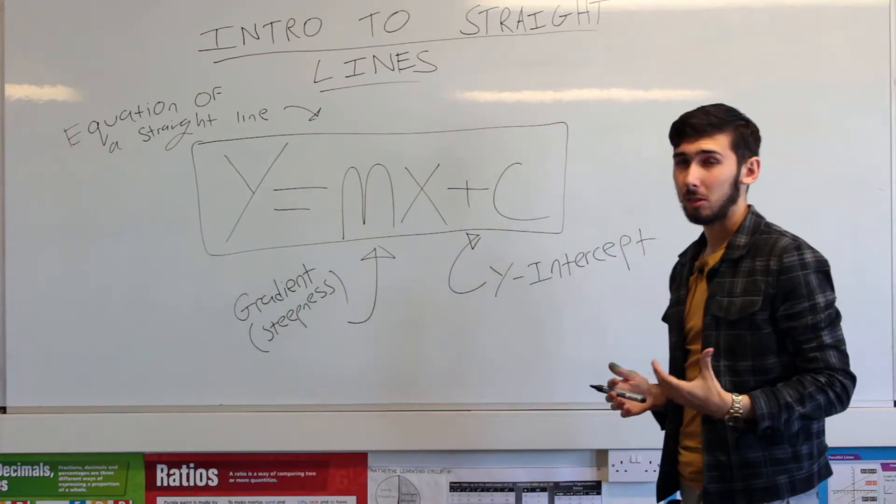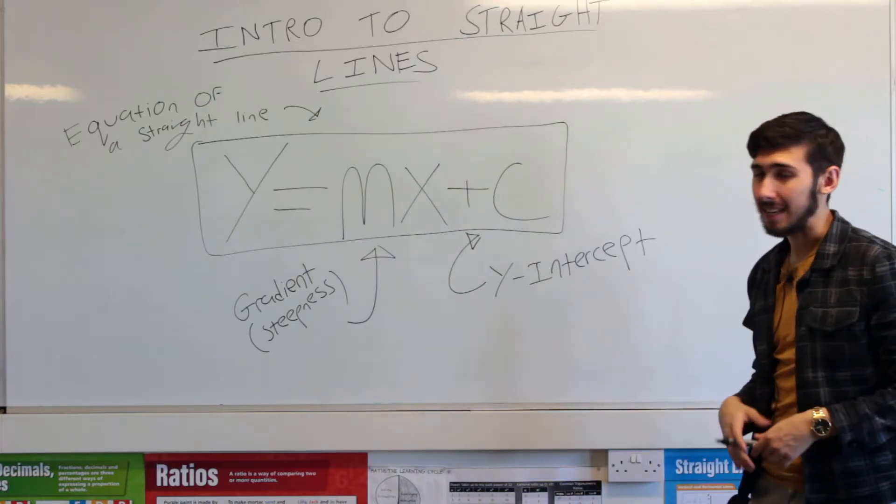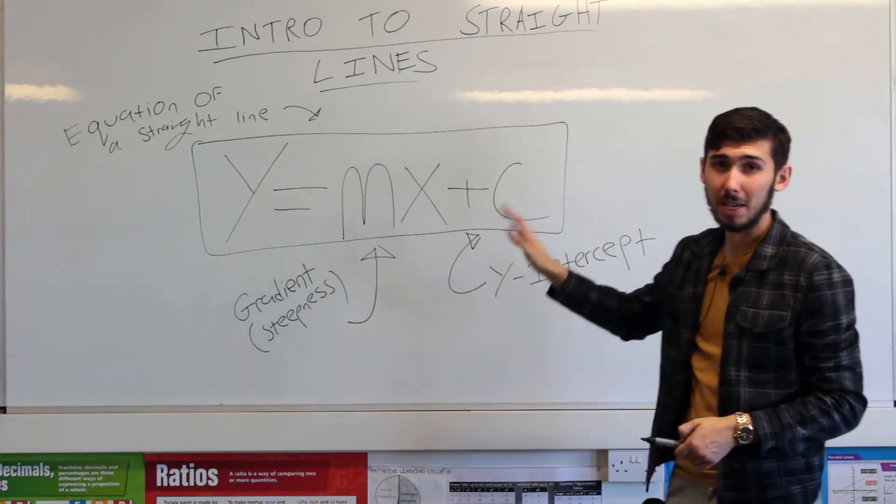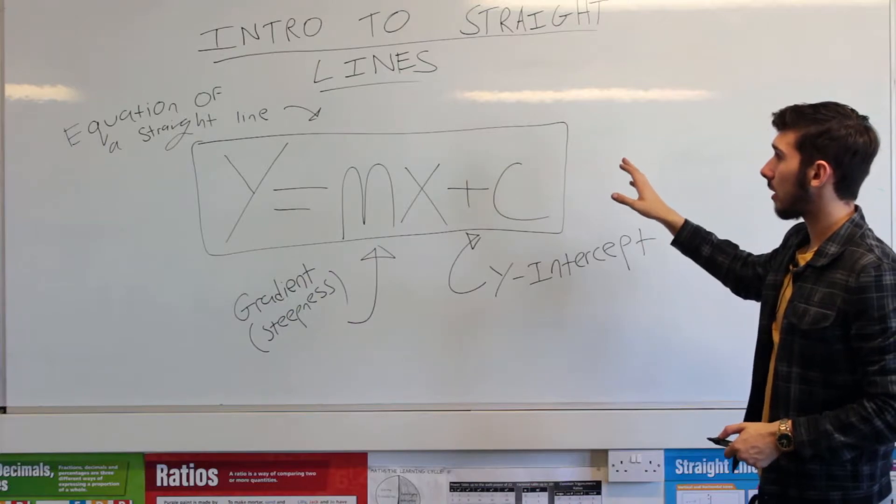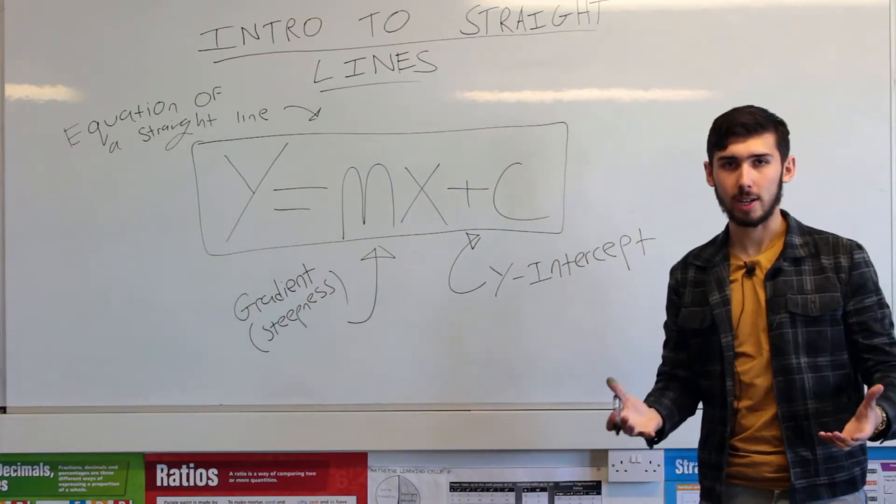Again, sometimes it's y equals mx plus b. Some people use a b, but in the A level, it's normally a c. Americans use b's normally. So this is y equals mx plus c, the equation of a straight line.